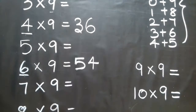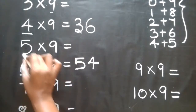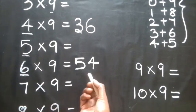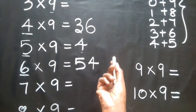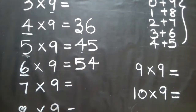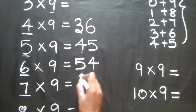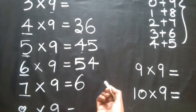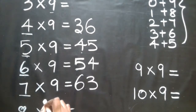4 times 9 is 36. For 5 times 9: the number is 5, the before number is 4 — add 9 to 5, so 5 times 9 is 45. For 7 times 9: the number is 7, the before number is 6 — add 9 to 3, so 7 nines are 63.